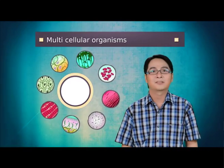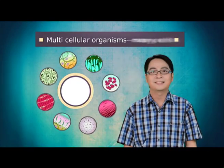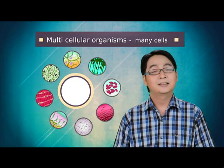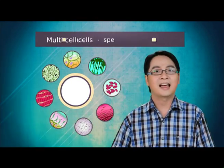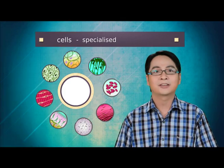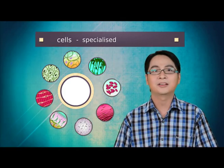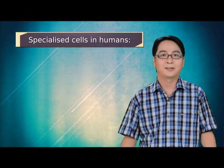Multicellular organisms consist of many cells. These cells are specialised and do not have to carry out all the living processes. The cells grow, change shape and differentiate to become specialised cells with specific functions. These are some examples of specialised cells.